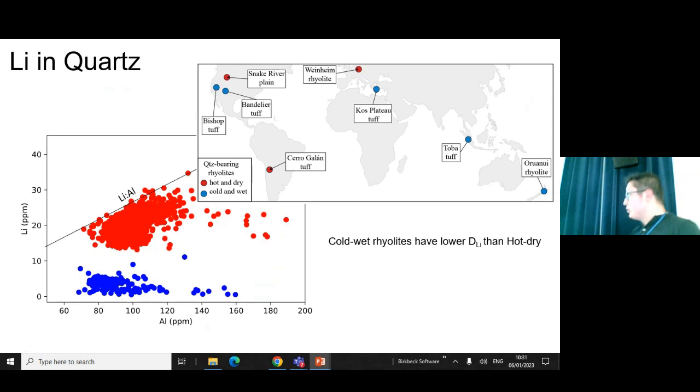The other way to balance aluminum is by hydrogen. So what we have is the first idea: these hot and dry systems have less water content, therefore less hydrogen in the quartz. While in the cold systems—cold and wet systems—you have more hydrogen, and therefore lithium is not able to go in the quartz.